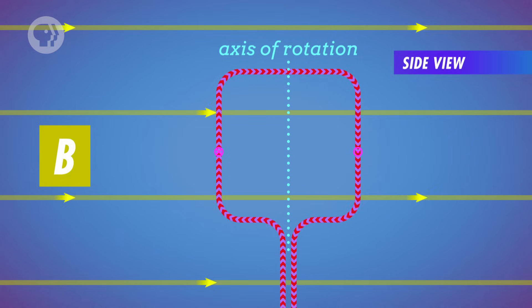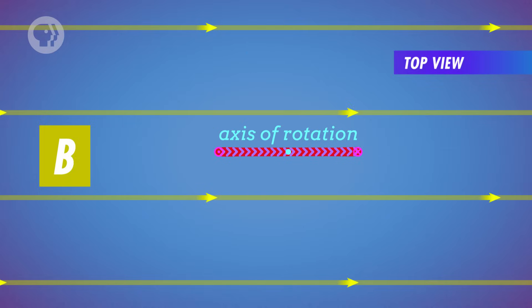The horizontal parts of the loop are parallel to the magnetic field, so it won't exert a force on them. But the vertical parts of the loop are perpendicular to the magnetic field, so it will exert a force on them.